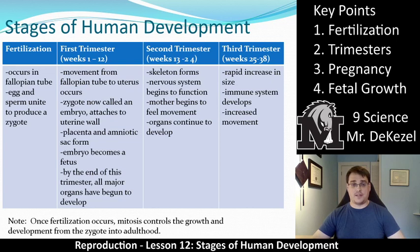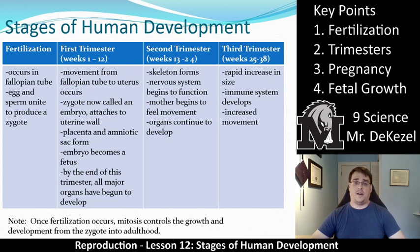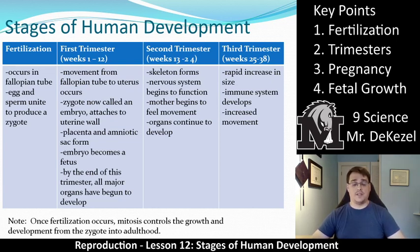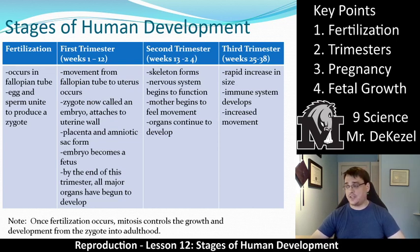The second trimester is from weeks 13 to 24. The skeleton forms — bones begin to develop, though not completely formed yet. The nervous system — brain and nerves — starts to form and begins to function. The mother begins to feel movement, so this is when you might start to feel kicks, small at first and growing larger. The organs continue to develop. Key milestones: feeling movement and the nervous system beginning to function.